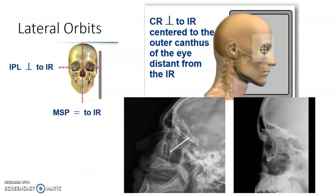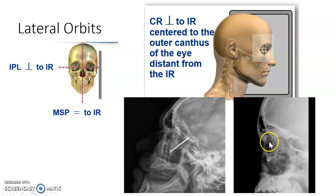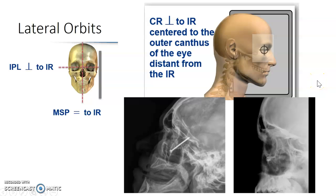Lateral orbits are really similar to your lateral facial bone position, lateral skull, and lateral sinuses — you're just going to center to the outer canthus. This image is showing a nail into the face. Hopefully that doesn't happen to you. Lateral orbits are really similar to what you've been doing for lateral facial work, and that is it.